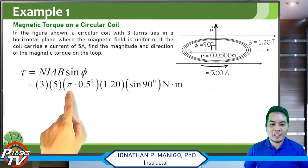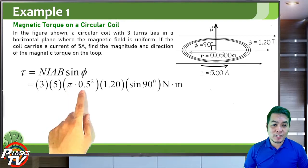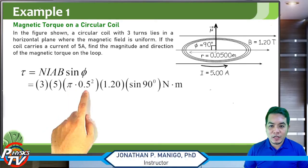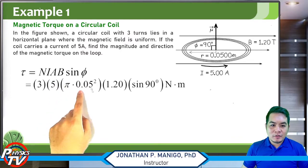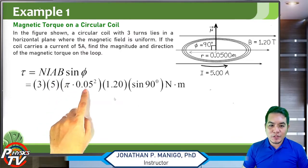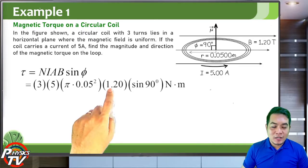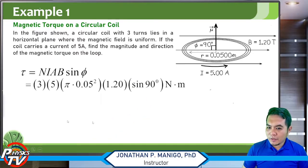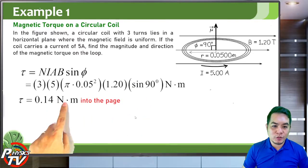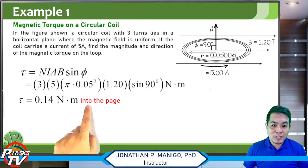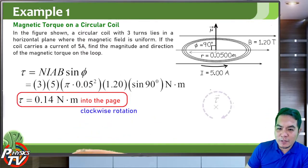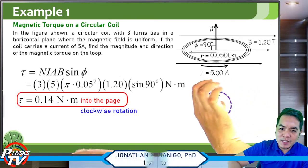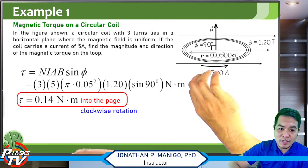For the magnitude, it's NIAB sine φ. Since φ = 90°, sine 90° = 1. With three turns, five amperes of current, area = π r² where r = 0.05 m, and magnetic field B = 1.20 tesla, the magnitude of the torque is 0.40 newton-meters. The direction is into the page, which by convention corresponds to clockwise rotation. A torque out of the page would correspond to counterclockwise rotation.